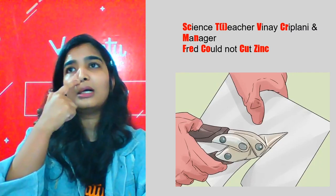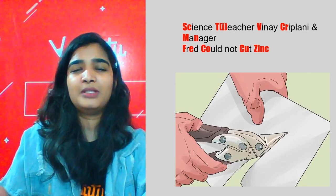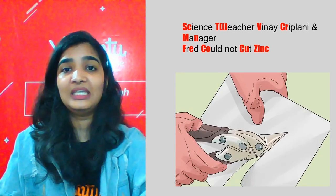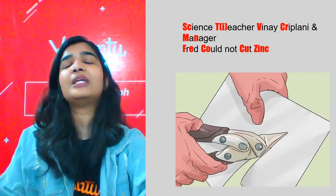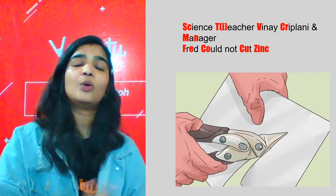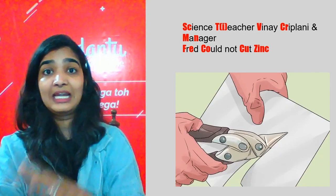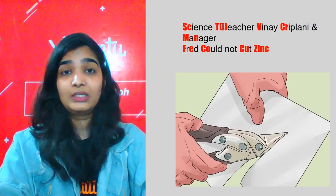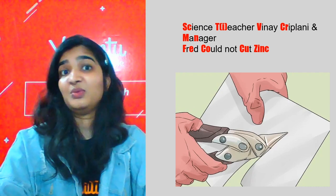I would suggest that if you're familiar with people whose names start with V or F, you can replace the names in the mnemonic. You can use your own creativity and come up with new mnemonics too — please share them in the comment section, and I'll use them as well!